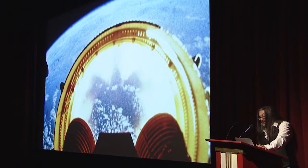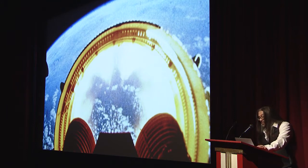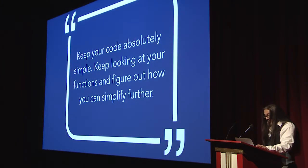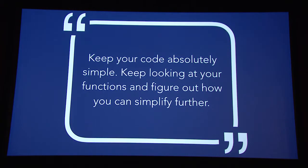After 1991, id Software's first stage of company development was complete, and another important principle was in effect: keep your code absolutely simple. Keep looking at your functions and figure out how you can simplify even further. We wrote all our games up to and including Quake in C, not C++.